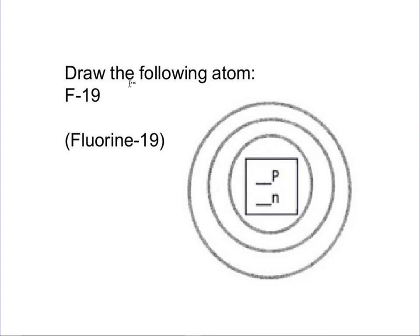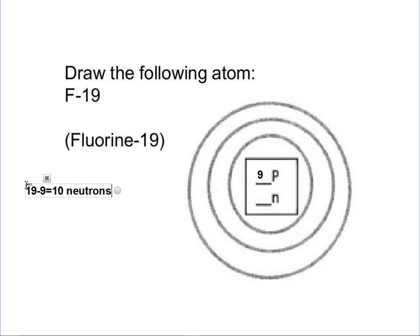In this one we're doing the reverse — draw the atom for F-19 or fluorine-19. Look up fluorine in your periodic table: fluorine is number 9, which is its atomic number and also the number of protons. To find the number of neutrons, take the mass number 19 minus the atomic number 9, which gives you 10 neutrons. Check: protons 9 plus neutrons 10 equals 19 — we're right.